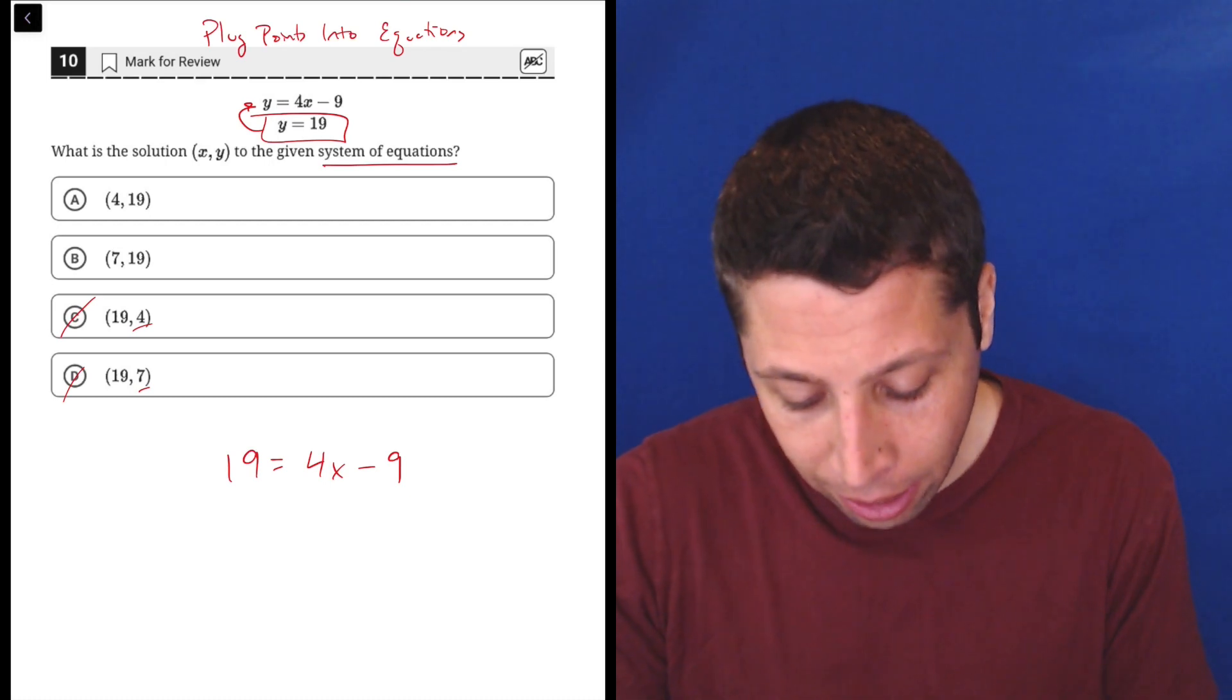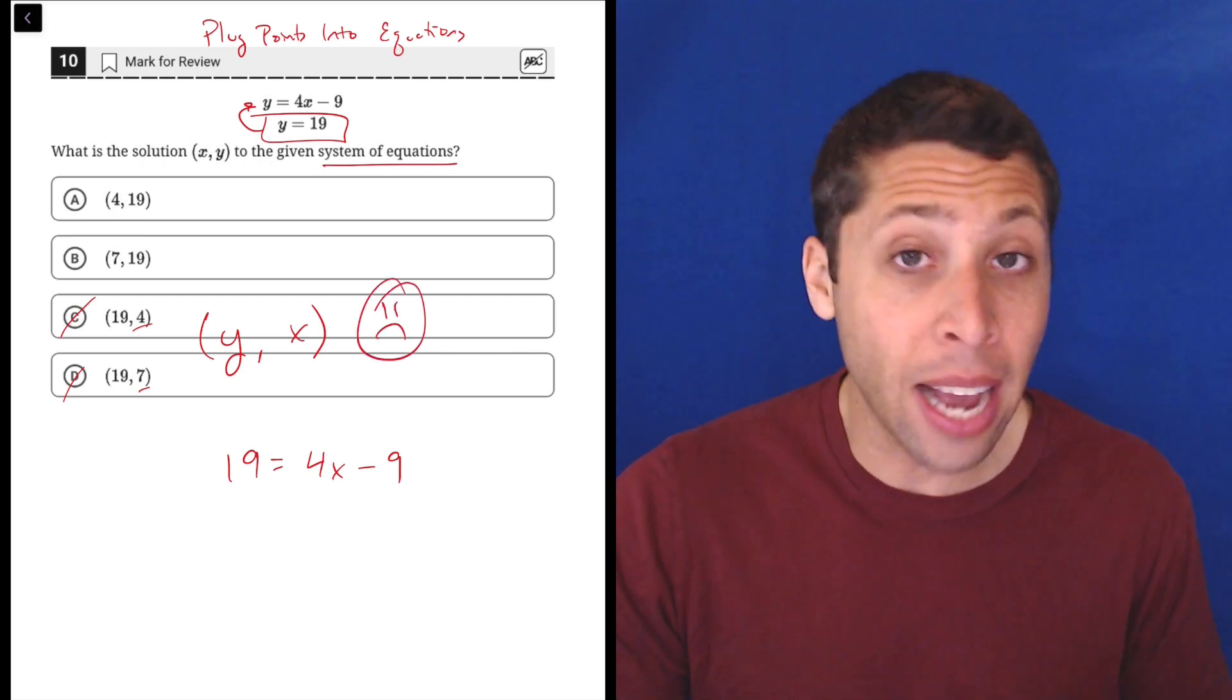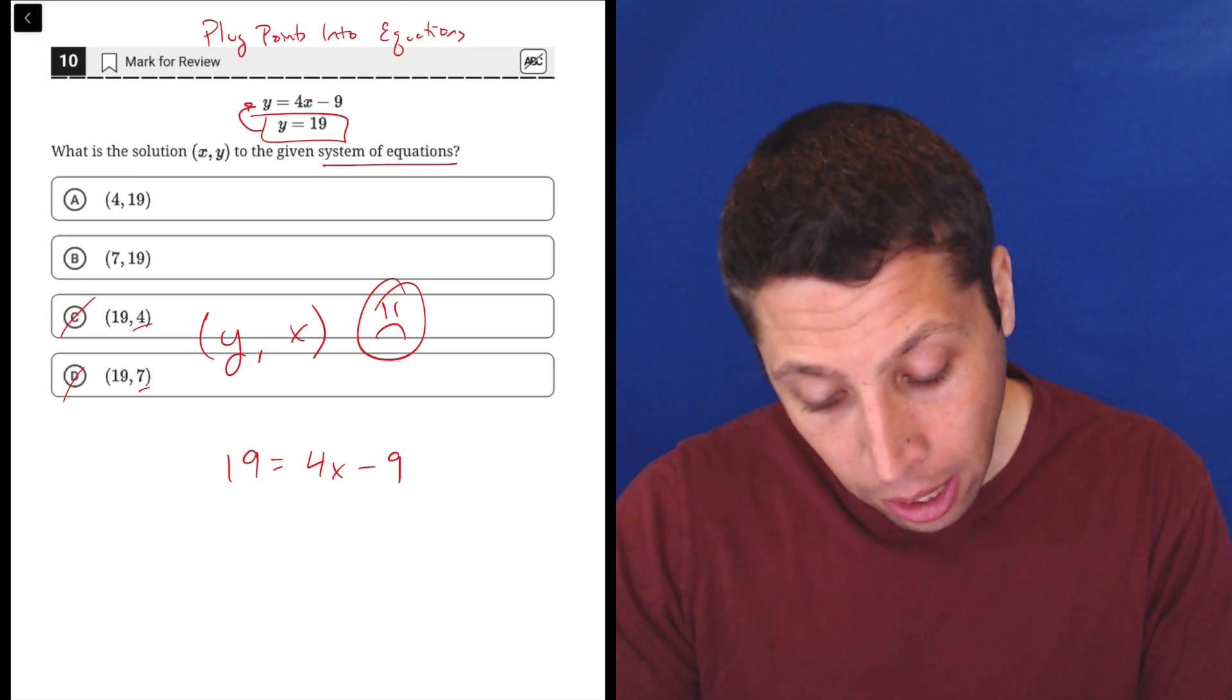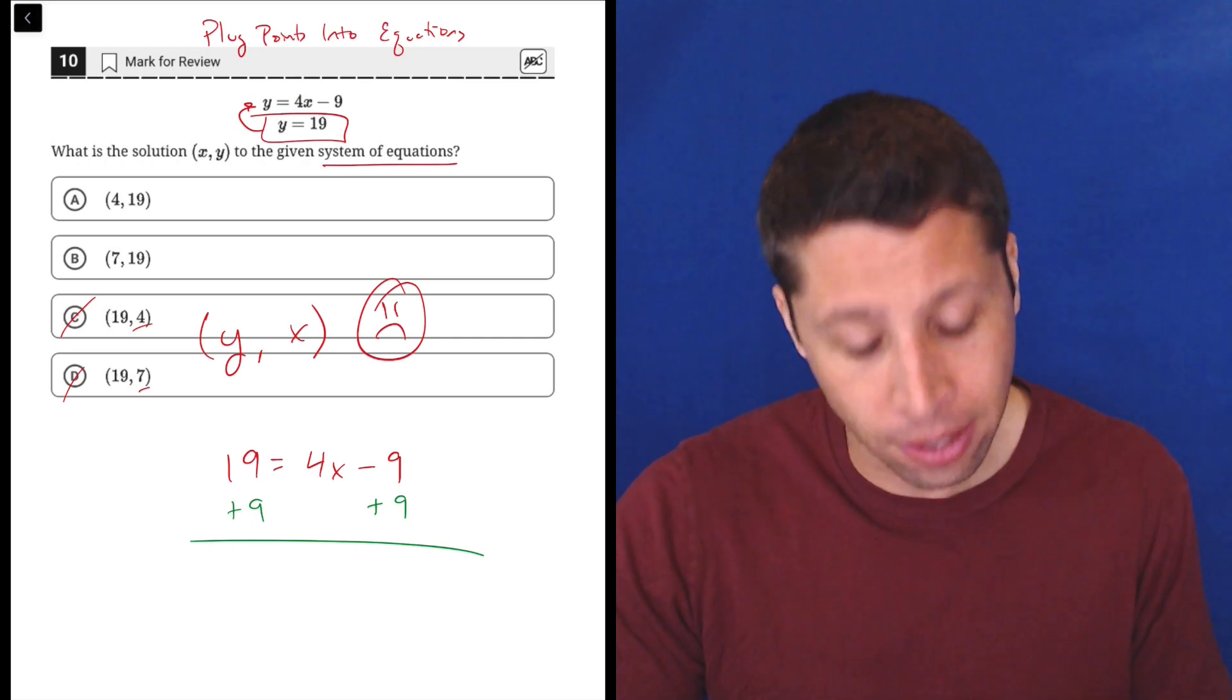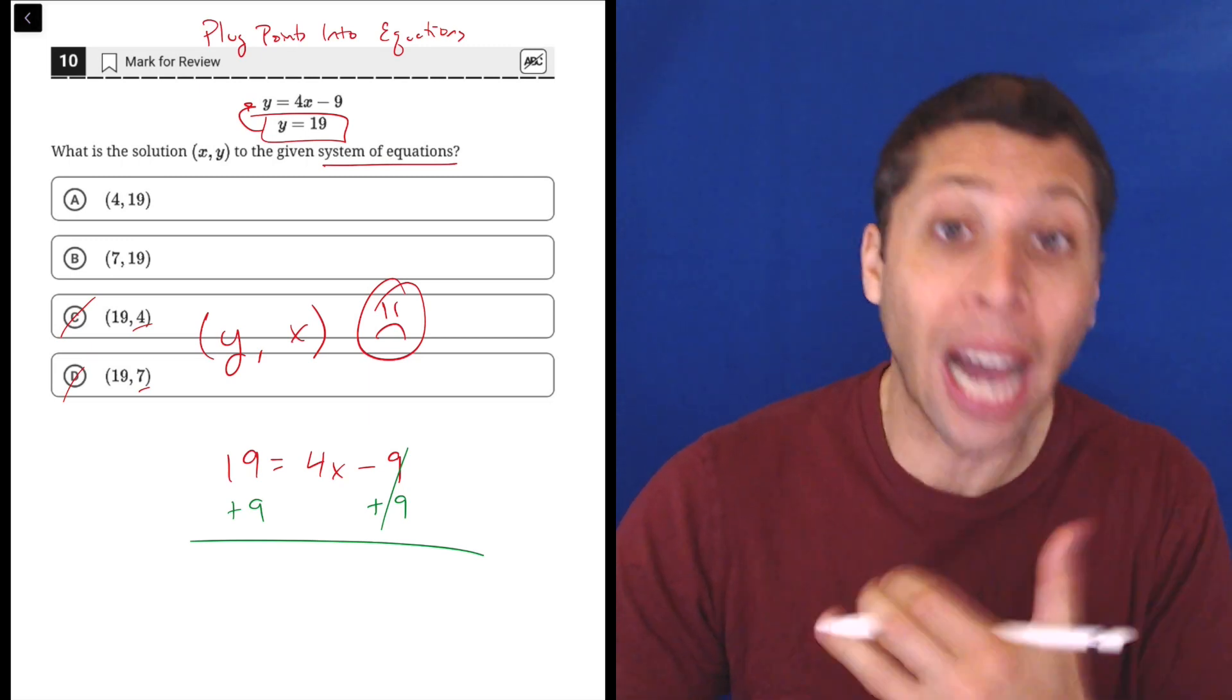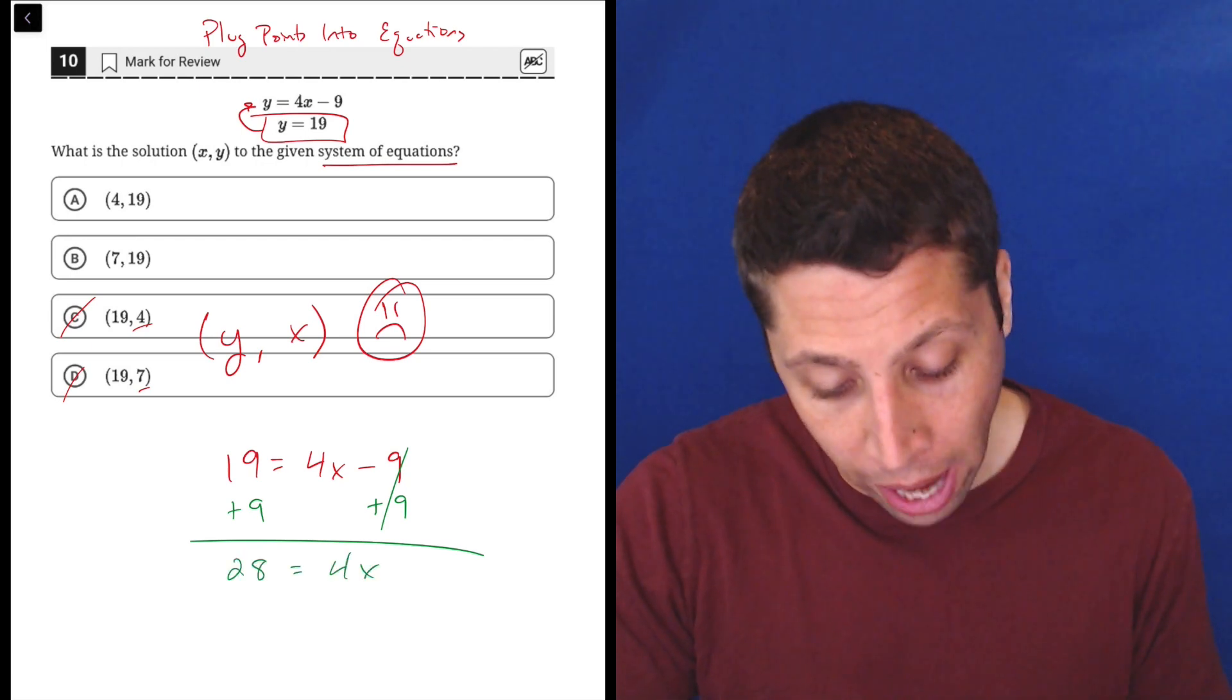That gives us two answer choices. If you want to, you can do some algebra here. You can just take your nine and we're going to cancel it out. We want to get that x alone, so we'd have to add nine to both sides. When we do that on the right, negative nine plus nine is zero. We got rid of that, but now we moved it over to the left side. And so 19 plus nine is 28, and that is equal to 4x.